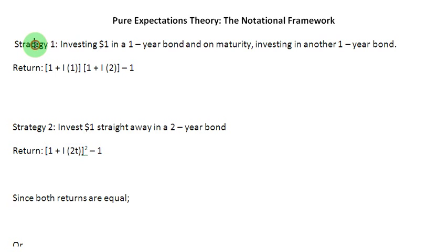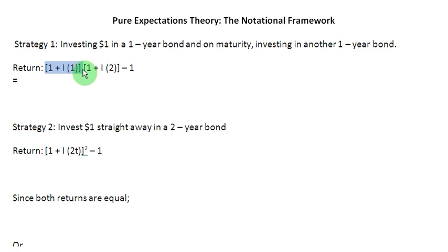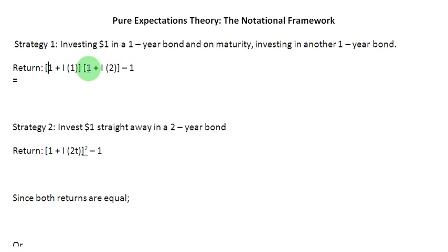Let us return back to strategy number one and this return, and now let us simplify this. So let me put an equality sign and then let me deal with the first two terms here, which are written in the square brackets. I am going to open up these brackets. So I am going to pick up this one and multiply it with this one in the second bracket. So I get a 1, and then I am going to put a plus sign. And then this one again is going to be multiplied with this term here, so that is going to give me an I2.